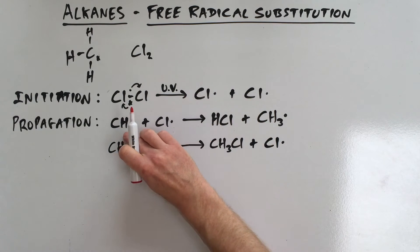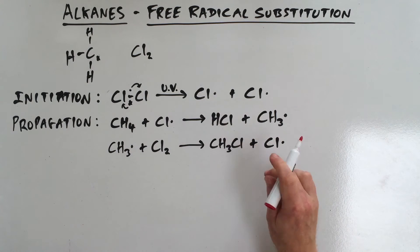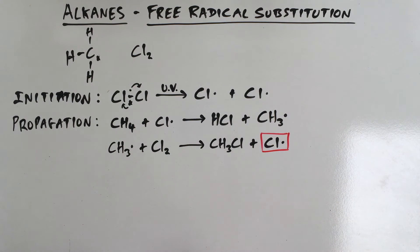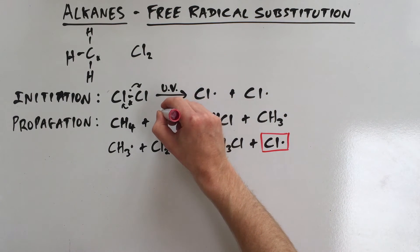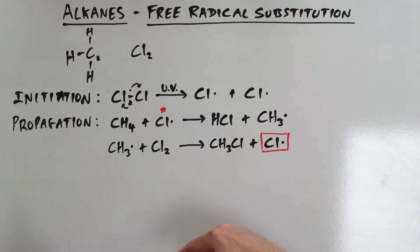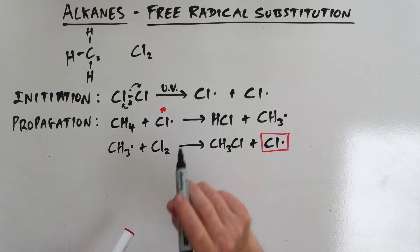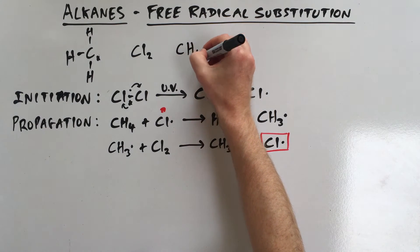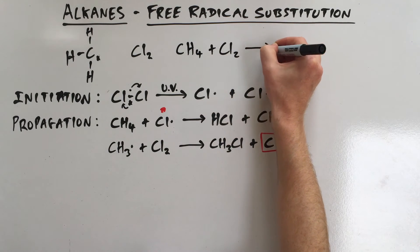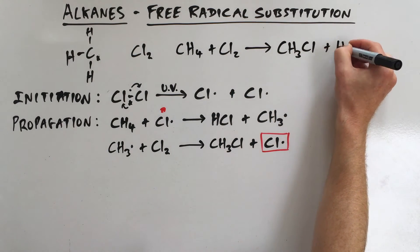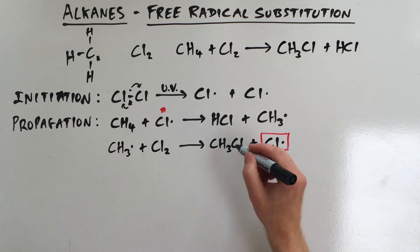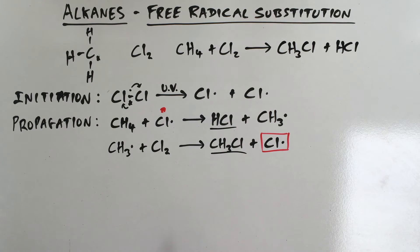This is what's called chain propagation, because it's the chlorine free radical that kick-starts the reaction in the first place, and as the reaction proceeds we're actually reforming a chlorine free radical, which then goes back and reacts with more methane. So this reaction goes around and around, forming CH₃Cl. The overall reaction is: CH₄ + Cl₂ → CH₃Cl + HCl. HCl and CH₃Cl are the stable products, while the two free radicals keep reacting to form more products.